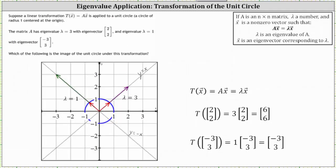More specifically, if we look at the transformation of the vector (2, 2): because (2, 2) is an eigenvector corresponding to the eigenvalue of three, under this transformation, T(2, 2) equals three times (2, 2), which equals (6, 6). The vector (2, 2) is scaled by a factor of three under this transformation.